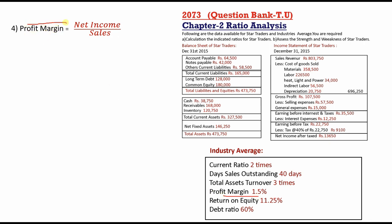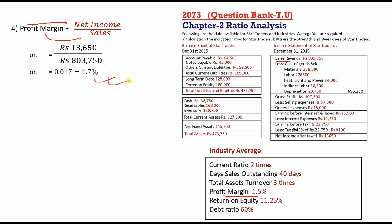Profit margin formula: net income divided by sales. Profit margin = $13,650 divided by $8,37,500 = 1.63%, approximately 1.7%.